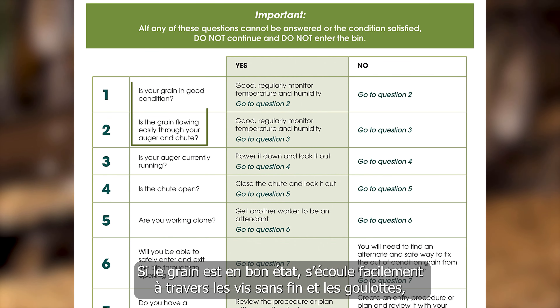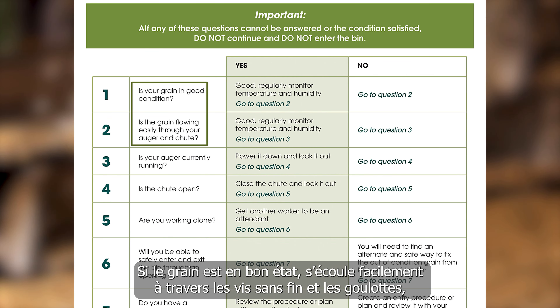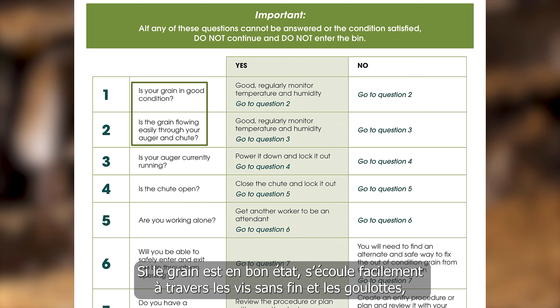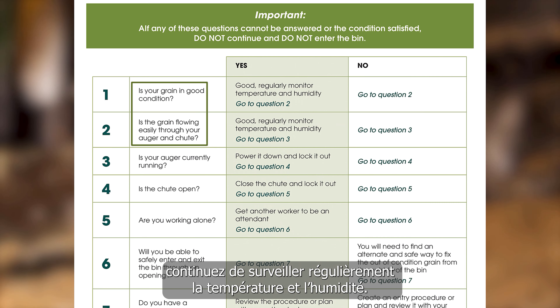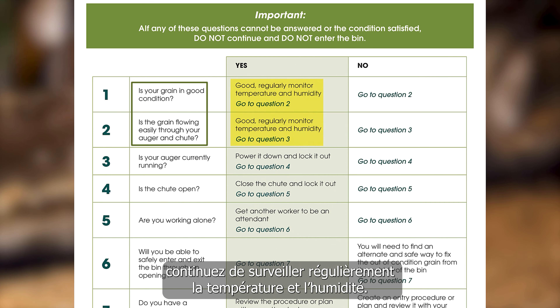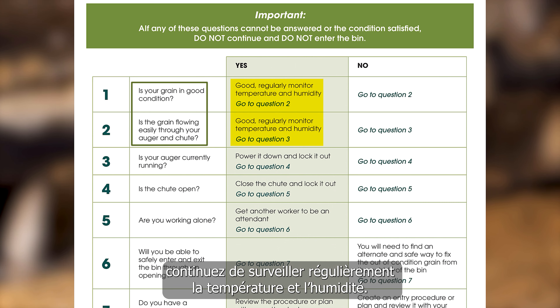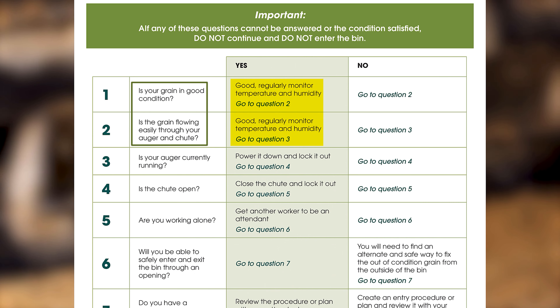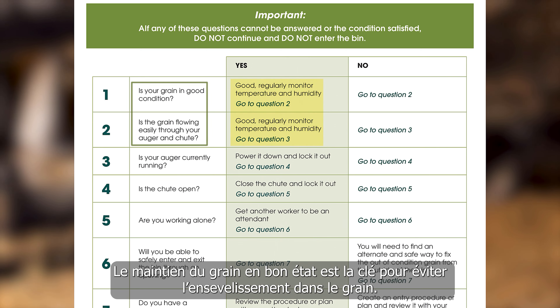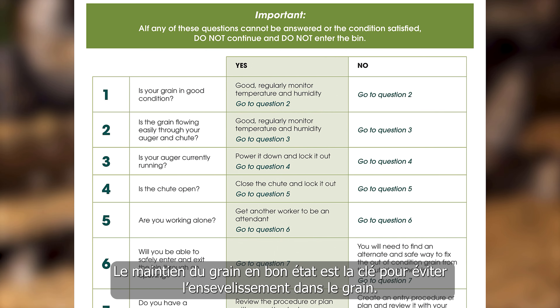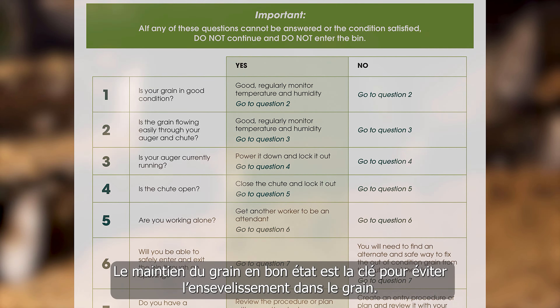If grain is in good condition and flows easily through augers and shoots, continue to regularly monitor temperature and humidity. Keeping grain in good condition is key to preventing grain entrapments.